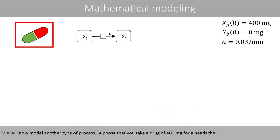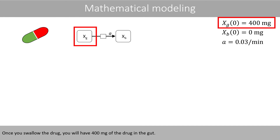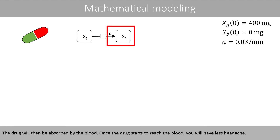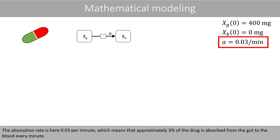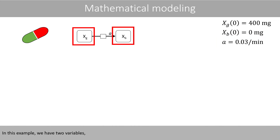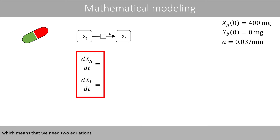We will now model another type of process. Suppose that you take a drug of 400 milligrams for a headache. Once you swallow the drug, you will have 400 milligrams of the drug in the gut. The drug will then be absorbed by the blood, and once it starts to reach the blood, you will have less headache. Initially, there will be no drug in the blood. The absorption rate is 0.03 per minute, meaning approximately 3% of the drug is absorbed from the gut to the blood every minute. In this example we have two variables, which means we need two equations.